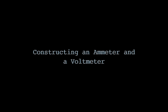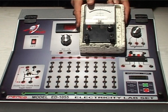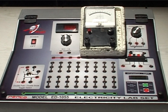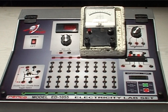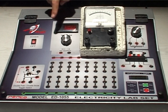Third experiment: constructing an ammeter and a voltmeter using a galvanometer, which measures currents at the micro-ampere order. Two quantities should be determined: the internal resistance and the maximum deflection current. In order to calculate these quantities, construct a circuit involving the galvanometer, a rheostat, and the power supply.